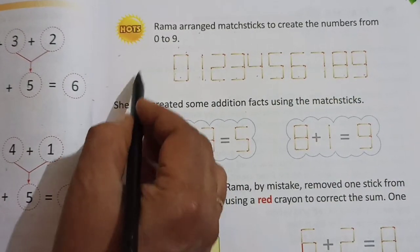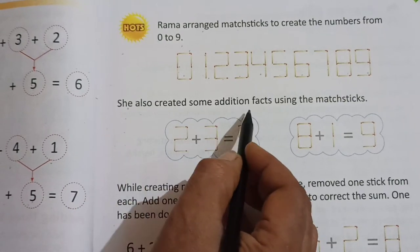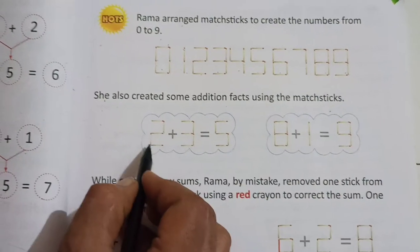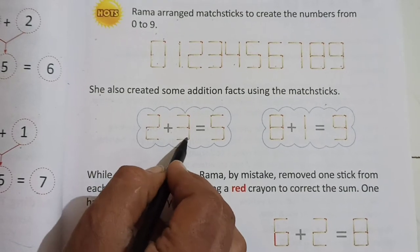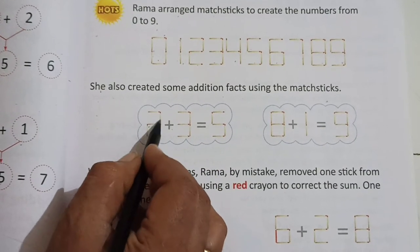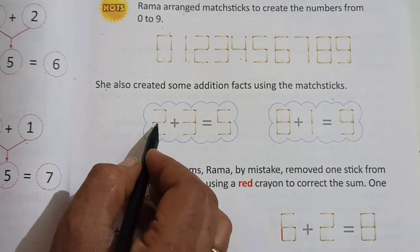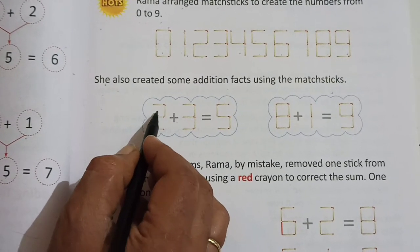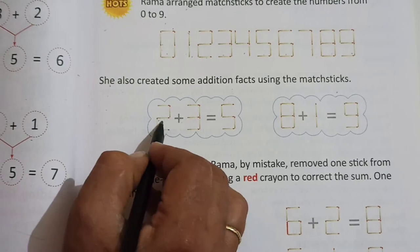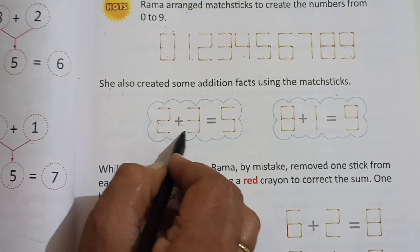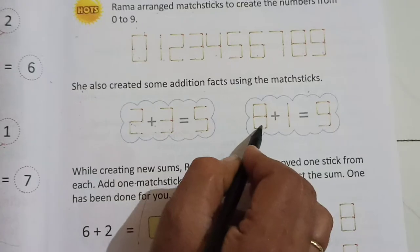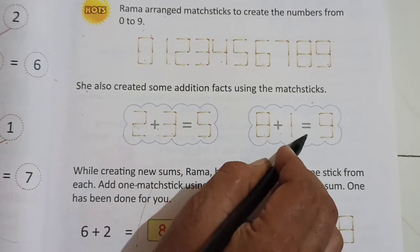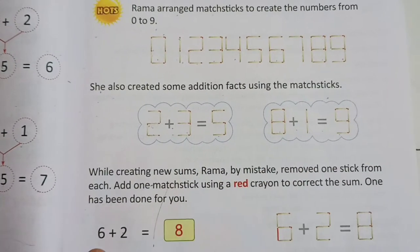She also, Rama, created some addition facts using the matchsticks. Like 2 plus 3. This 2 is created by Rama with the help of matchsticks. You know, 2 plus 3 is equal to 5. Now here 8 plus 1 is equal to 9.